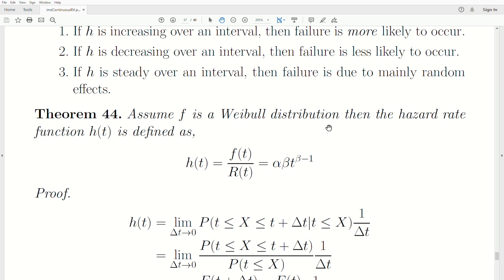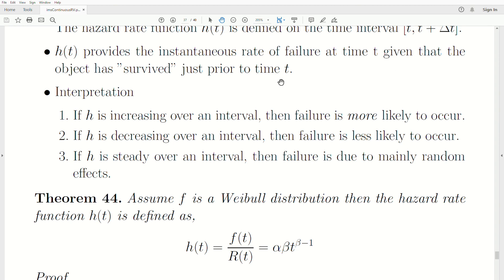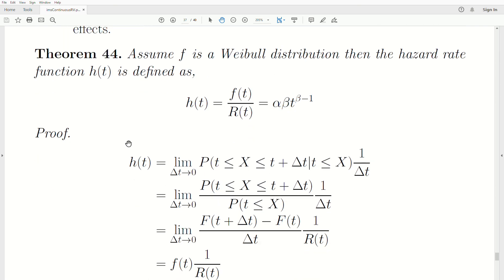Assume f is a Weibull distribution, then the hazard rate function h of t is defined as this: f of t divided by R of t equals alpha beta t to the beta minus 1. This measures what we call the instantaneous rate of failure at time t, given that the object survived just prior to t. Let's prove that. We can't really talk about points because probabilities of points is zero in a continuous distribution. So we have to talk about some sort of delta, some sort of region or interval for it to make sense. But then we can let that region or delta go to zero, and that gives us a limiting distribution of that.